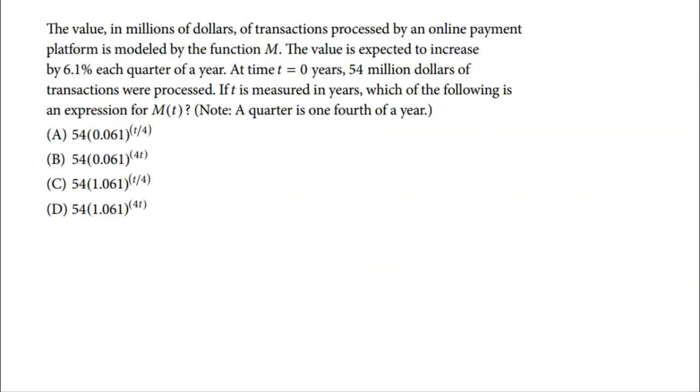This problem says the value in millions of dollars of transactions processed by an online payment platform is modeled by the function M. The value is expected to increase by 6.1% each quarter of a year at time zero years. $54 million of transactions was processed if T is measured in years, which of the following is an expression for M of T. So here, hopefully we know how to build a model. Pretty easy to build a model here. So out in front, we're going to build a model for this function. Out in front is going to go the initial value. So that's going to be 54 at a time of zero years. And then in parentheses, it's going to be my growth rate or my decay rate. Well, clearly said I'm increasing by 6.1%. That's going to be one plus 0.061. I'm increasing. So I'm going to add that 6.1% as a decimal. So of course, that's going to be 1.061. So I can immediately get rid of A and B because they're decaying. They're not using it properly. It's got to be one plus that rate.